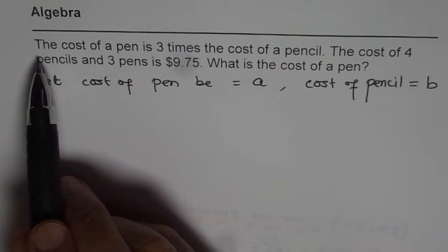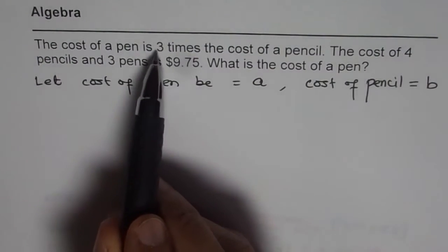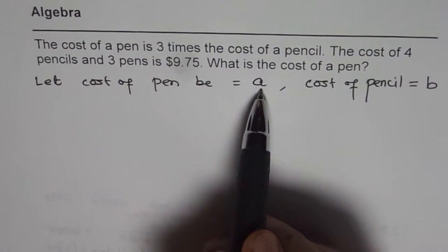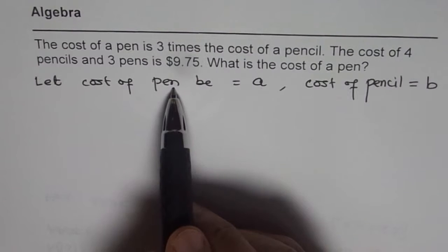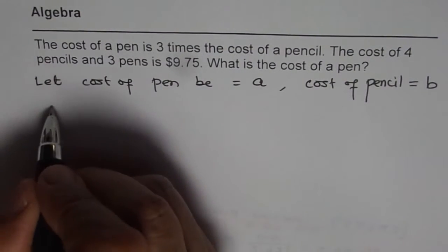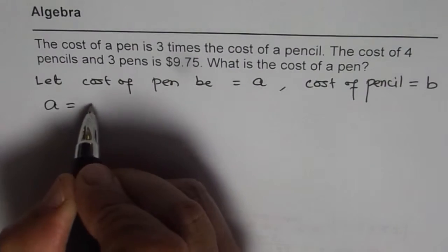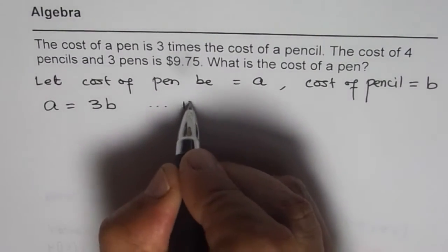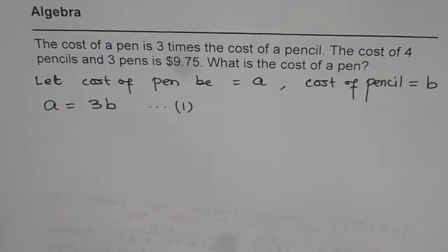Now when you read the first sentence, the cost of a pen is three times the cost of a pencil. That means A which is the cost of the pen should be three times B. So we get our first equation which is A equals to 3B. It is a good idea to number it, number one. So first statement gives you first equation.